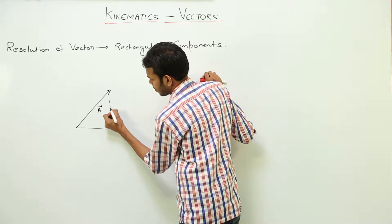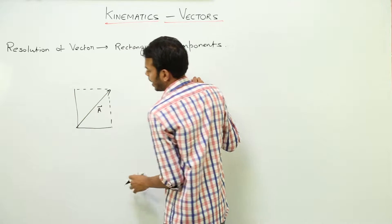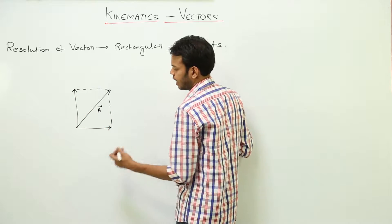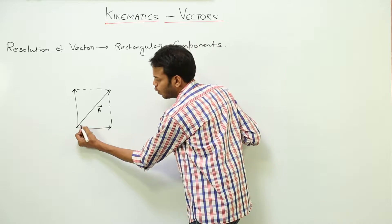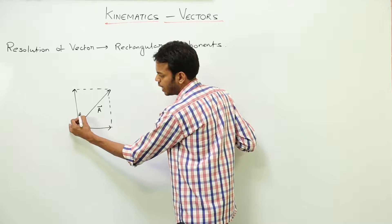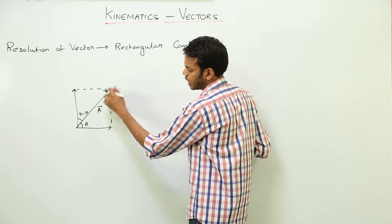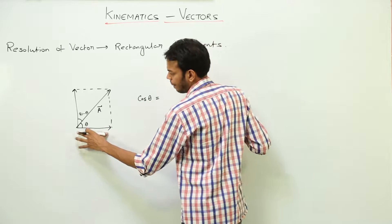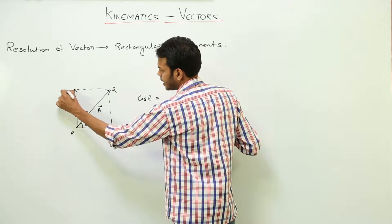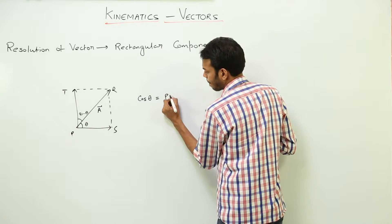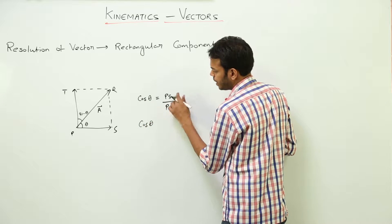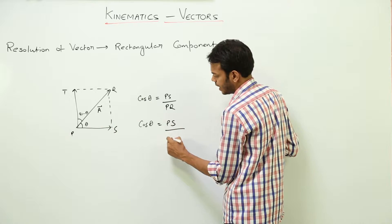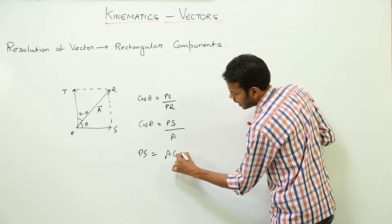Let's make a construction in this direction and in this direction. The basic purpose is I want vector A to be resolved into one vector and another vector. To find what these vectors are, consider this angle to be theta. Since this angle is 90 degrees, this other angle would be 90 minus theta. Now, using cos theta — cos theta equals base over hypotenuse — so cos theta is PS over PQ, where PS is the component we want and PQ is the magnitude of vector A, so PS becomes A·cos(theta).